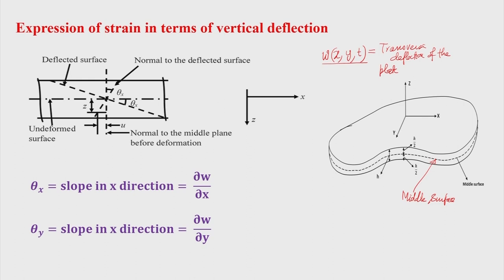All quantities — stress resultants, bending moment, shear force — are expressed per unit length. For example, the bending moment unit is newton-meter, expressed as newton-meter per meter width of the plate. Similarly, shear force is expressed in newton per meter or newton per millimeter. Due to deflection of the plate, the elastic line has a slope. If theta_x is small, then theta_x is approximately equal to del w / del x, which is the slope in the x direction, and theta_y = del w / del y is the slope in the y direction.